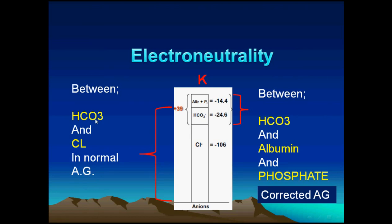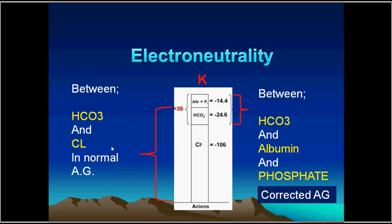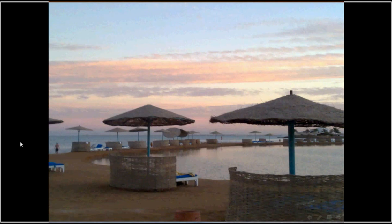In summary, electroneutrality means: increase in bicarbonate is associated with decrease in chloride, and vice versa — this is a normal anion gap change occurring through the gastrointestinal tract or kidney. Increase in albumin is associated with decrease in bicarbonate; decrease in albumin is associated with increase in bicarbonate, which helps us correct the anion gap. Hypokalemia is associated with increased stimulation of carbonic anhydrase and retention of sodium bicarbonate. Electroneutrality deserves attention and understanding in order to make good interpretations of the pathophysiology of the ABG. Thank you.